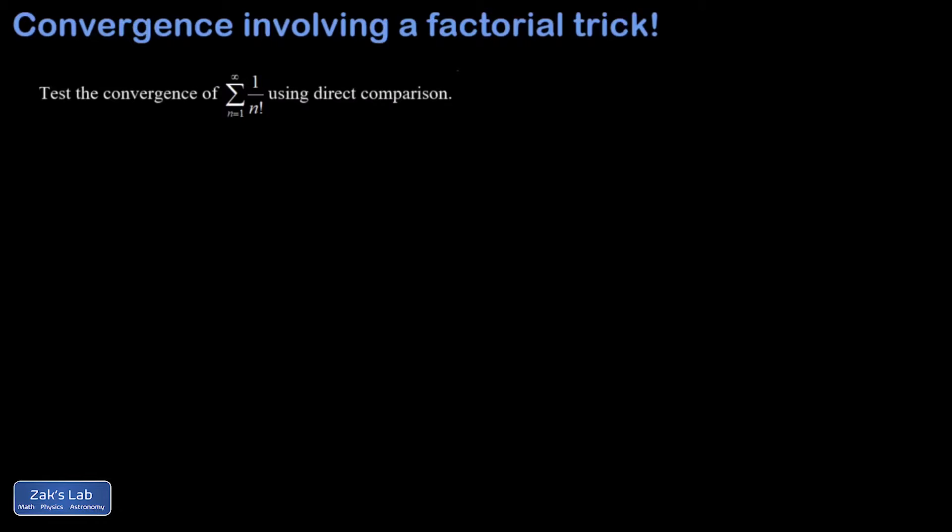If you already know about the ratio test, that's by far the easiest way to do this, but we can do it by direct comparison if we're willing to really get into the weeds on proving some things about factorials.